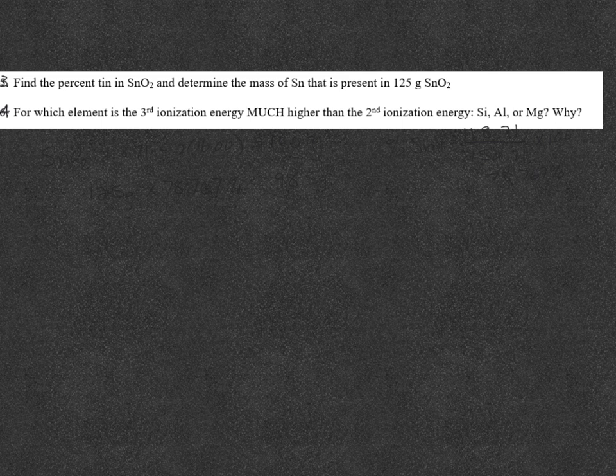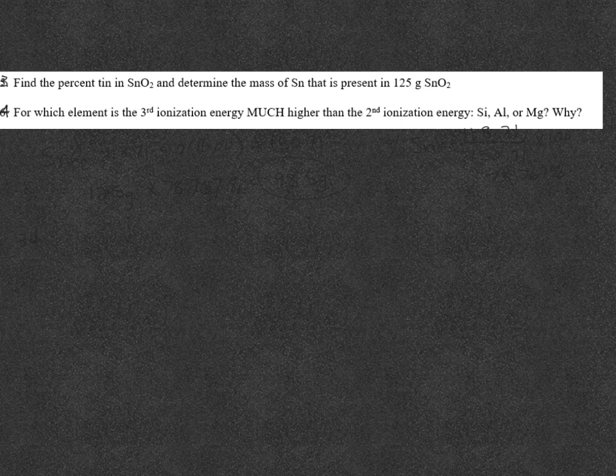Question 34, we're looking at successive ionization energies. So the first ionization energy is the energy needed to remove the first electron. Second ionization energy is energy to remove the second, et cetera. Now, there's a jump in ionization energy values.